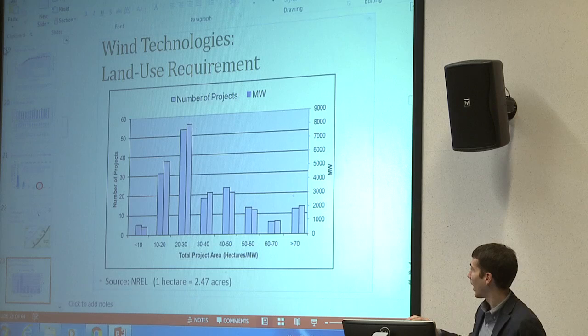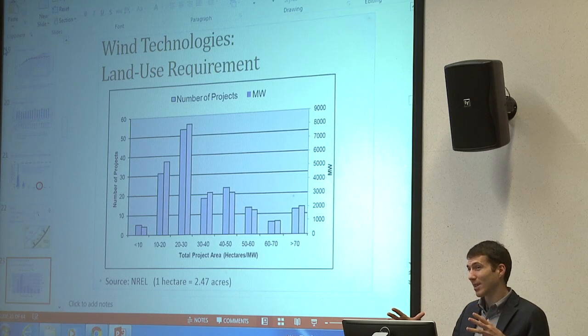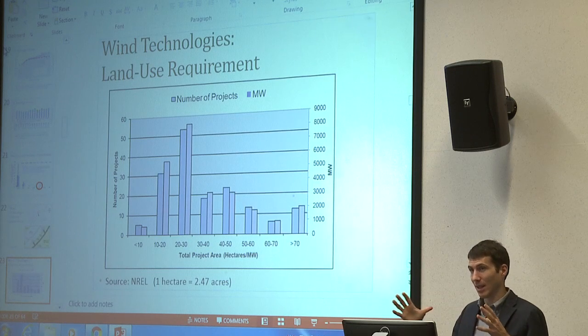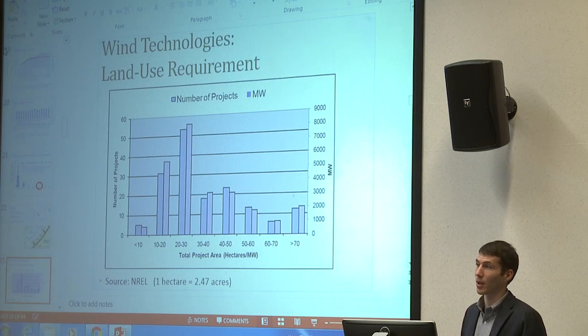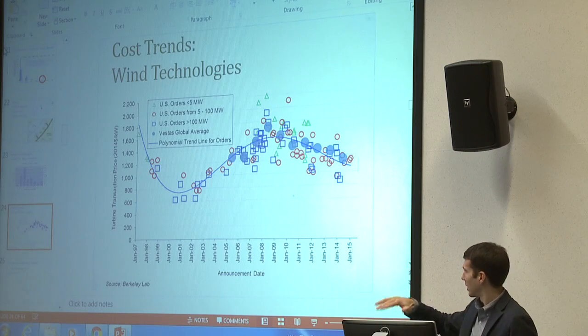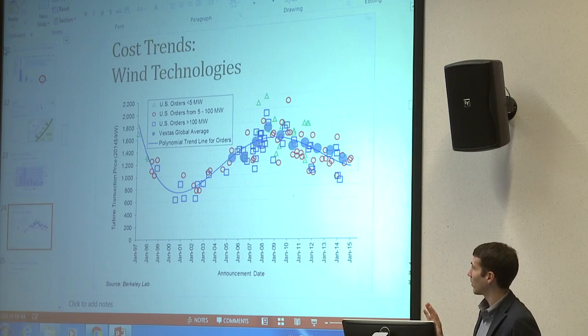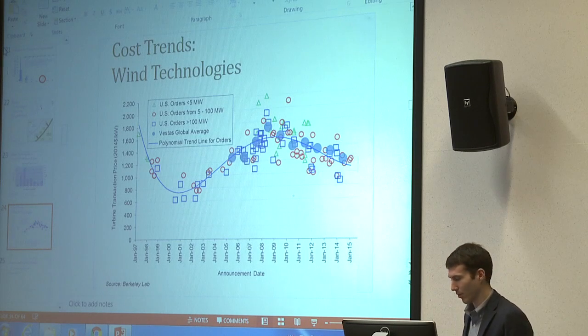On average, a utility-scale wind operation covers about 20 hectares (roughly 50 acres). By comparison, a solar operation on 10 acres might hold a 1–2 megawatt installation. So wind takes roughly four to five times more space to produce the same amount of energy as solar. Solar cost trends are also declining much more steeply than wind costs.